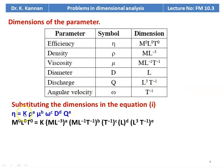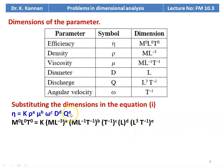Substituting the dimensions into equation 1: the left-hand side is M⁰ L⁰ T⁰. On the right-hand side, K is a constant; rho is (M L⁻³) to the power a; mu is (M L⁻¹ T⁻¹) to the power b; omega is (T⁻¹) to the power c; D is L to the power d; and Q is (L³ T⁻¹) to the power e. We have MLT terms on both sides.